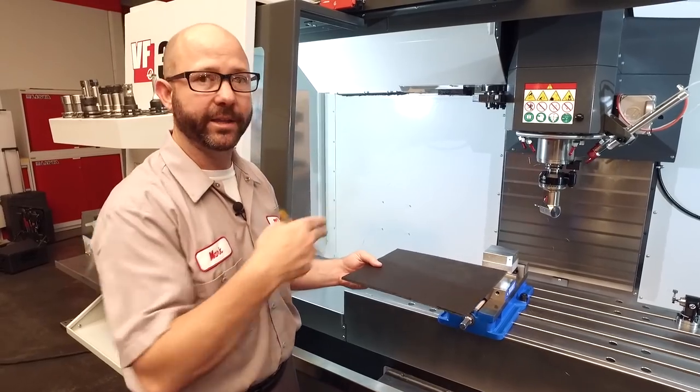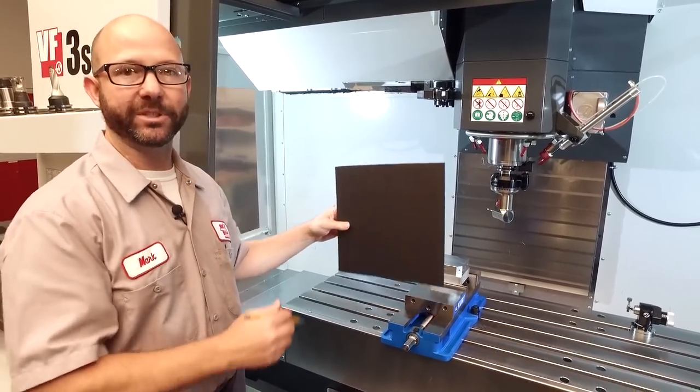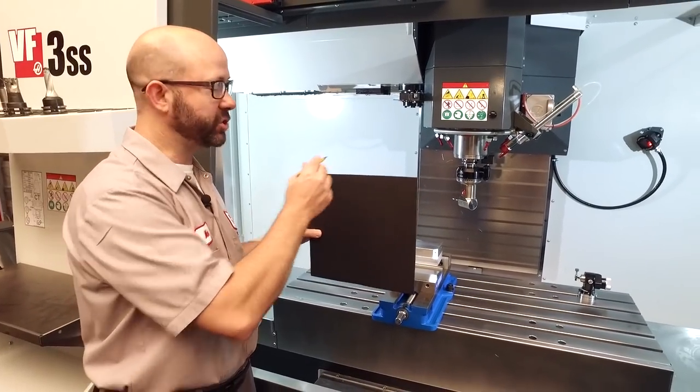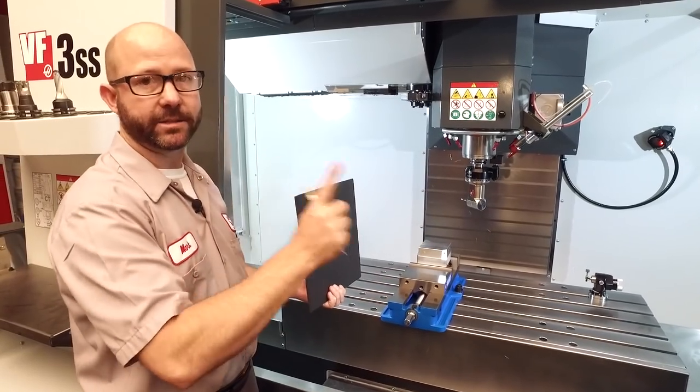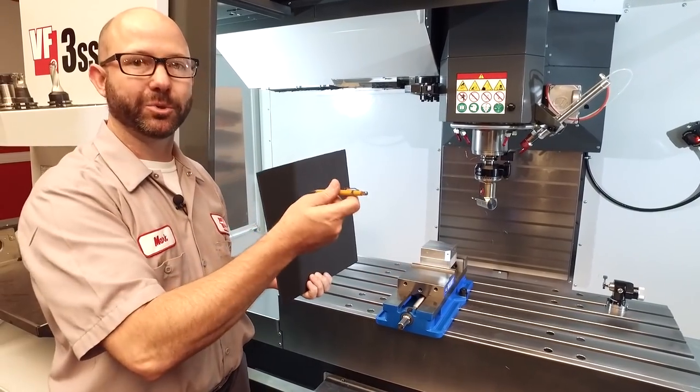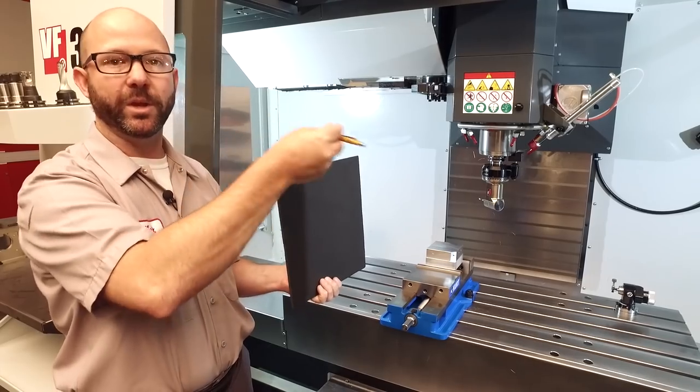If we want to drill along the Y axis, we're going to use the G18 plane. We're going to position our tool along the X and Z axis and drill along the Y axis. To drill and tap along the X axis, we're going to use the G19 plane. We're going to position our tool in the Y and the Z axis and drill to an X depth.